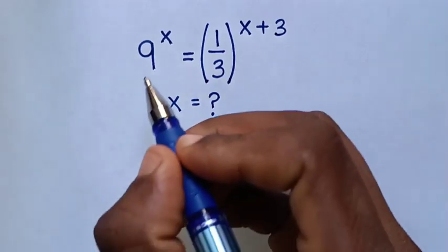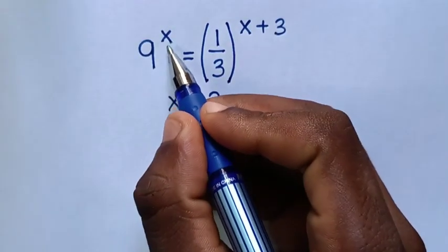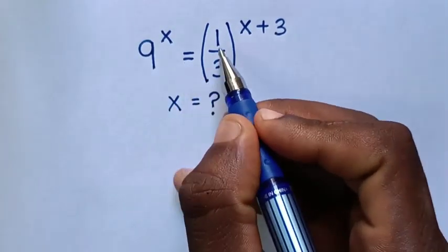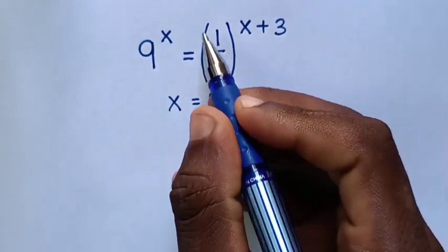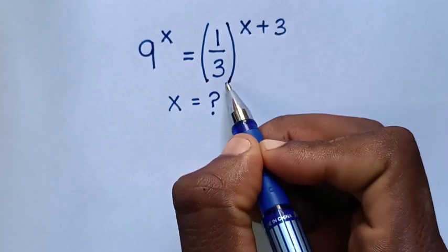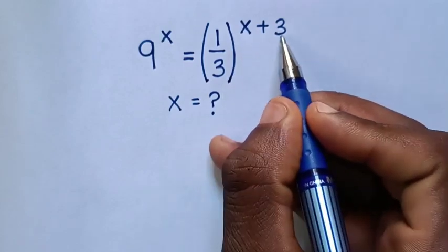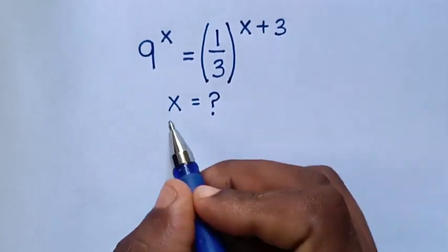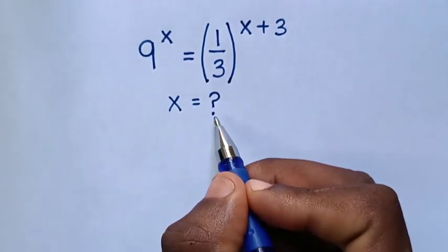Hello. How to solve 9 power x is equal to 1 over 3, brackets, power of x plus 3, to find the value of x.